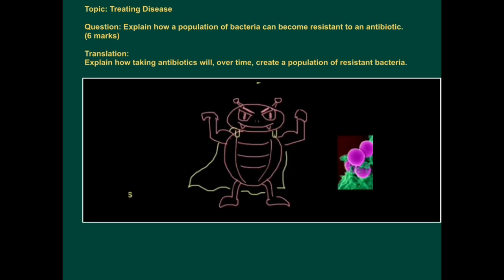This exam application tutorial is on the topic of treating disease. It's a very popular question. Explain how a population of bacteria can become resistant to an antibiotic, for six marks.